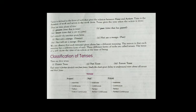Basically, there are three phases of time. Present, which is the time that is now. Past tense, time that has passed. Third one, future, time that is yet to come. There are three tenses: present tense, past tense, and future tense.